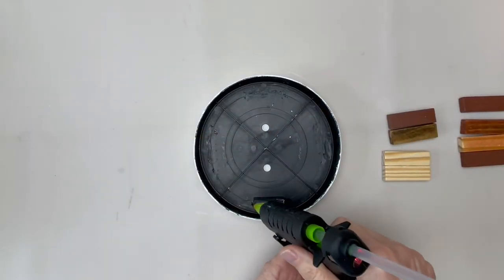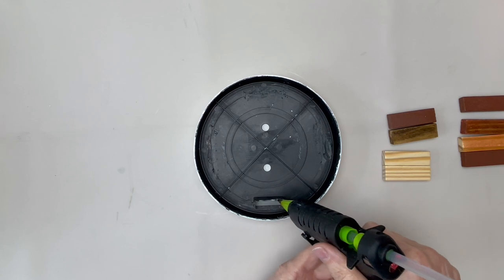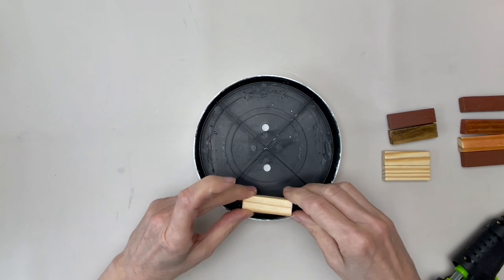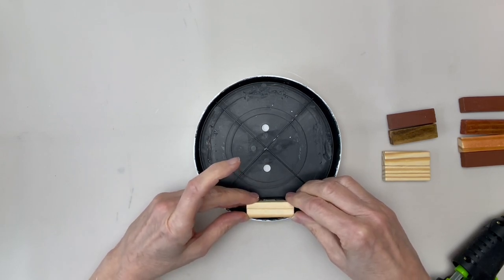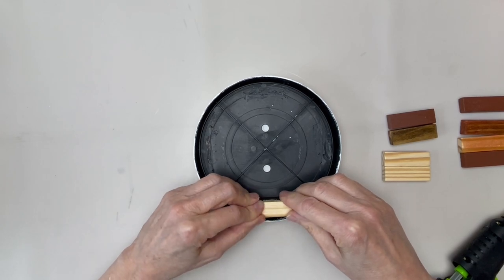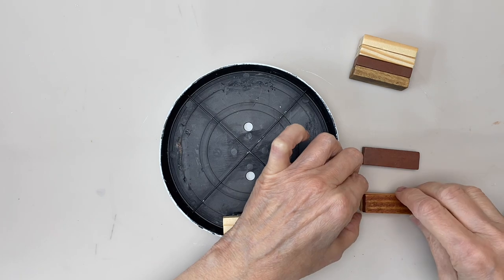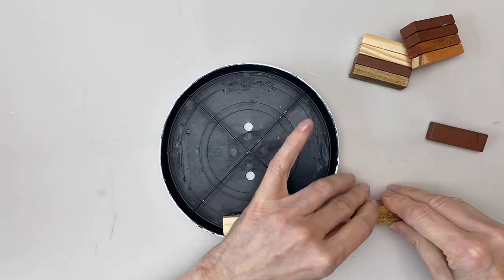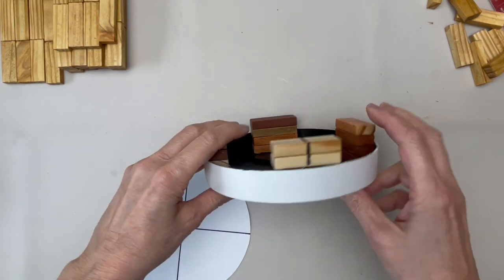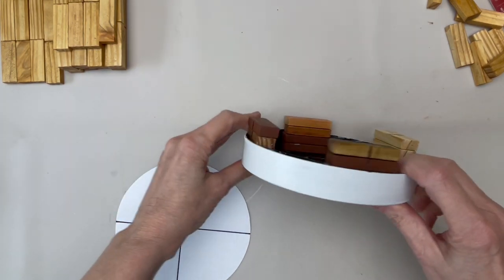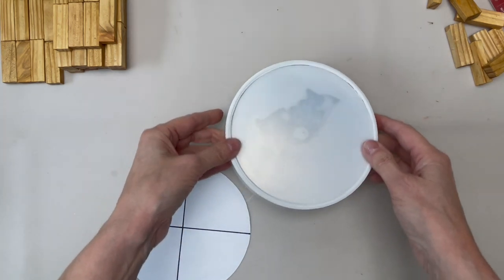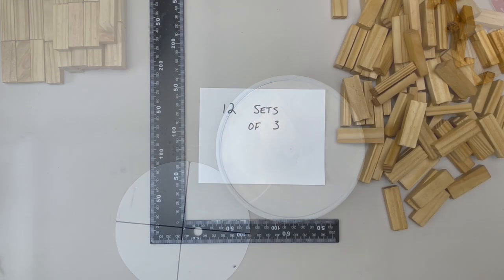Where the built-in hanger is, I glued two tumbling tower blocks right on top of that with some hot glue and then added four tumbling tower blocks to the 12 o'clock, 3 o'clock, and 9 o'clock spots on the back of the mirror. I marked off the center of each of these stacks and made a paper template marking the center just to keep me honest.